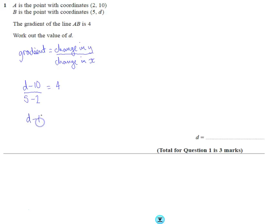So I know that d minus 10, all divided by 3, is equal to 4. Or d minus 10, if I multiply by 3, is going to be equal to 12. And then I can work out that d is 12 plus 10, which is 22. So the value of d will simply be 22.